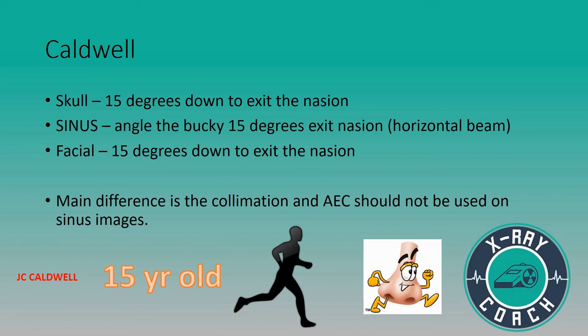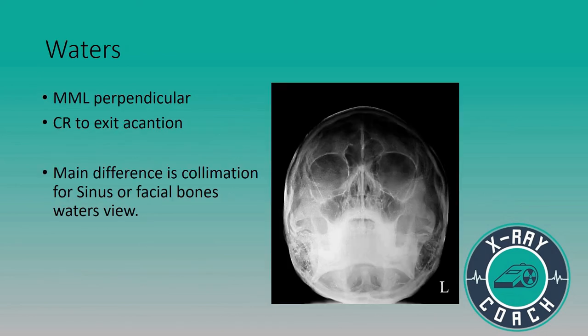It's all 15 degrees down to exit at the nasion — for skull, sinuses, and facial bones. Remember on the sinuses you need a horizontal beam, so you're going to angle the bucky 15 degrees and not the CR. The main difference again is the collimation, and AEC should not be used on sinus images. The last view is the Waters. For all Waters views — whether sinuses, nasal bones, or facial bones — the MML is always perpendicular and the CR exits at the acanthion. The only difference between series is the collimation. A Waters is a Waters is a Waters; on sinuses, set a fixed technique and do not use the AEC.